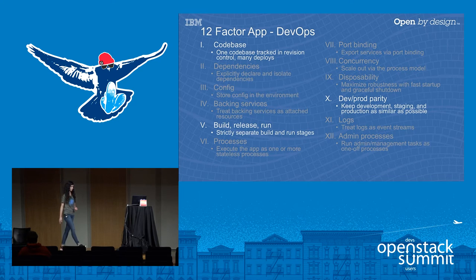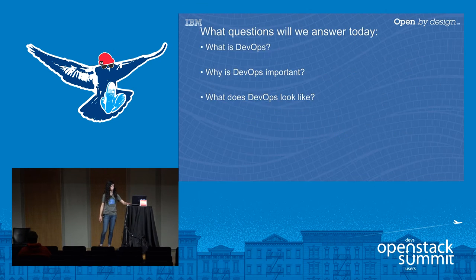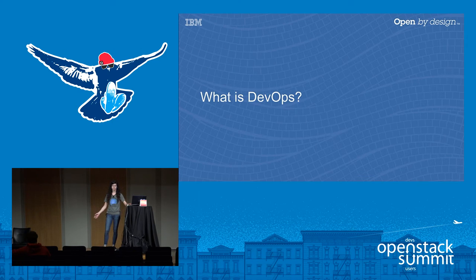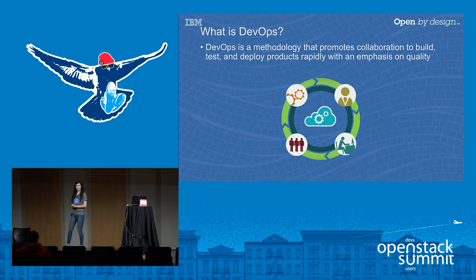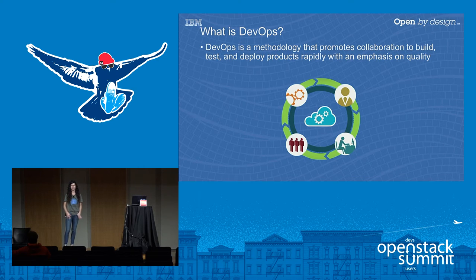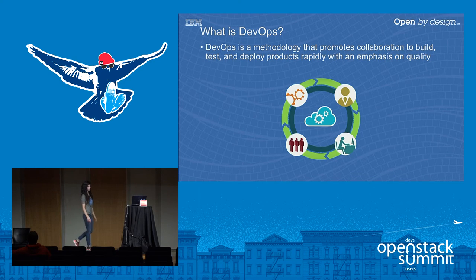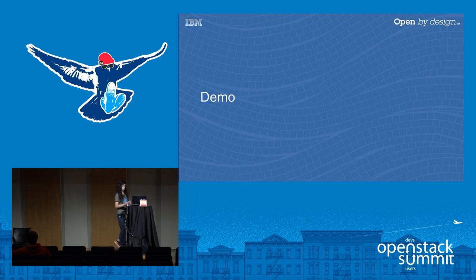That way, by the time you get to production you know what's going to happen. So we're going to answer three questions today: what is DevOps, why is it important, and what does DevOps look like? So what is DevOps? There's no one single definition — if you look it up in the dictionary you're probably not going to find it. In general, it's a methodology that encourages collaboration through your whole development process — build, test, and deploy — with the idea of getting products out rapidly with a high emphasis on quality.